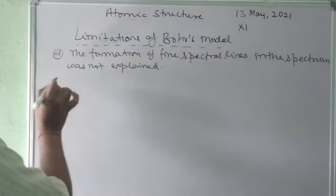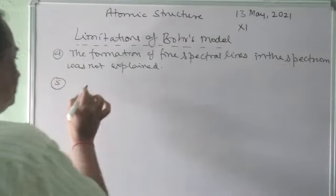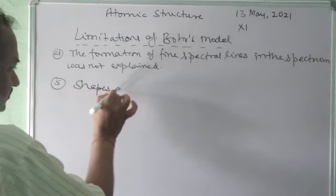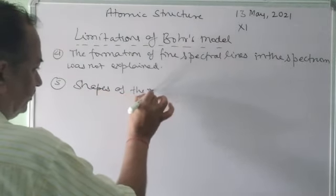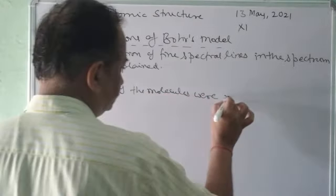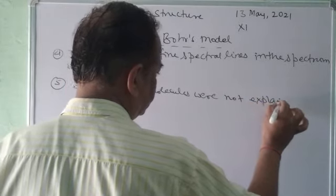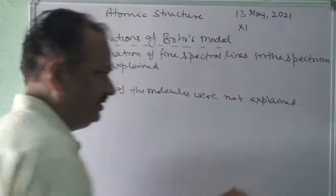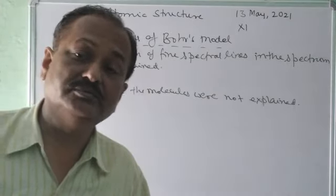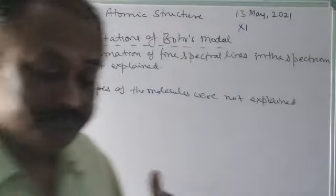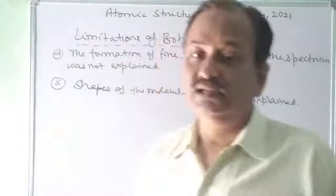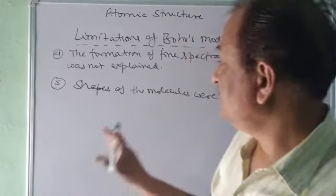The next point is about the shapes of molecules, which were not explained. Niels Bohr was unable to explain molecular geometry — the molecular shapes — and why some molecules have a particular shape. This is also one of the greatest objections to Bohr's model.